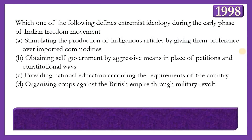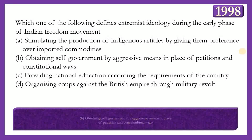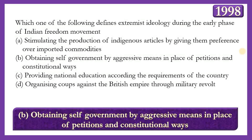Next question: Which of the following defines the extremist ideology during the early phase of the Indian freedom movement? Options: (A) stimulating production of indigenous articles; (B) obtaining self-government by aggressive means in place of petitions and constitutional ways; (C) providing national education; (D) organizing co-operation against the British Empire through military means. The answer is option B — obtaining self-government by aggressive means — as the extremists believed in fighting the British aggressively, not through petitions or constitutional methods.